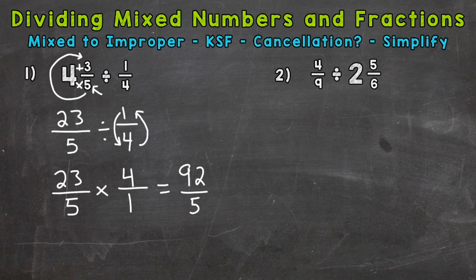That is our final answer, but we don't want to leave it as an improper fraction. Let's convert it back to a mixed number. We do that by looking at our numerator, 92, and dividing it by 5. So we need to do 92 divided by 5. How many whole groups of 5 out of 92?